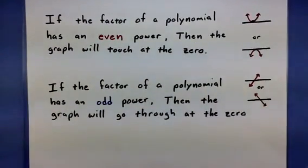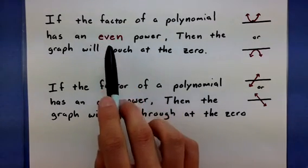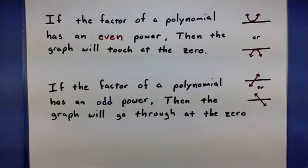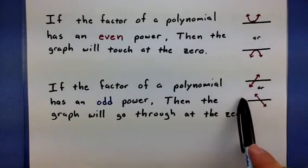From these factors, you can tell whether it's either going to just touch or actually go through at that zero. In fact, if a factor happens to have an even power, it's just going to touch. However, if a factor of the polynomial has an odd power, then it's actually going to go through.